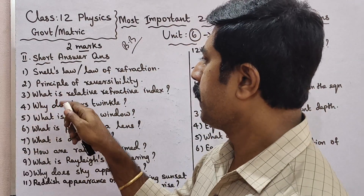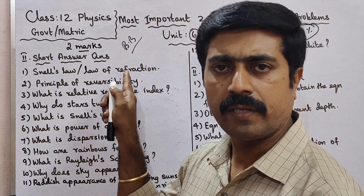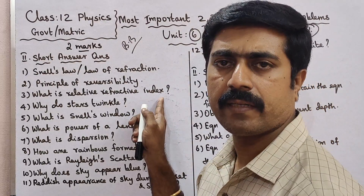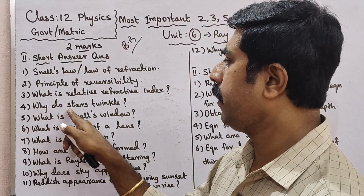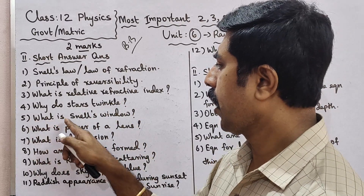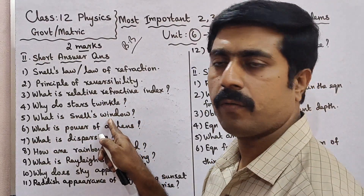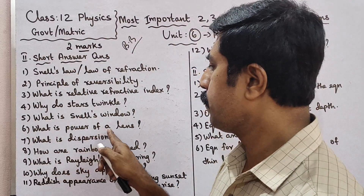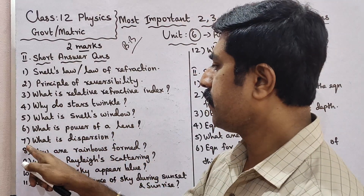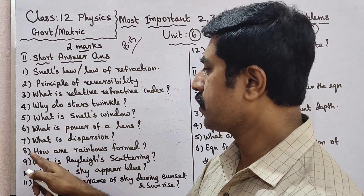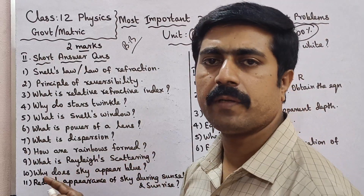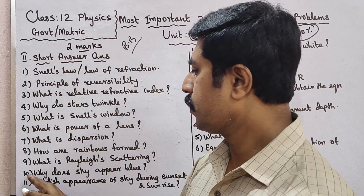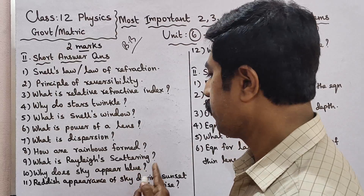Question number 2 — State the Principle of Reversibility with a diagram. Question number 3 — What is Relative Refractive Index? Write the formula also. Question number 4 — Why do stars twinkle? Question number 5 — What is Snell's Window? Know the definition and derivation. Question number 6 — What is Power of a Lens? Question number 7 — What is Dispersion? Question number 8 — How are Rainbows formed? Question number 9 — What is Rayleigh's Scattering?